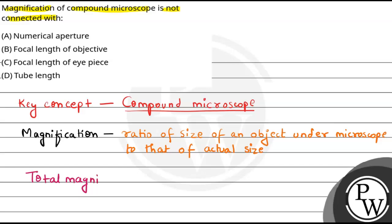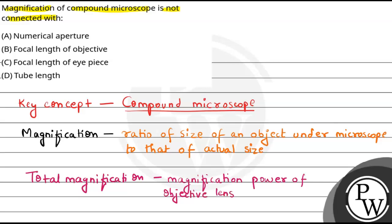Total magnification is the magnification power of the objective lens — that is known as the total magnification.